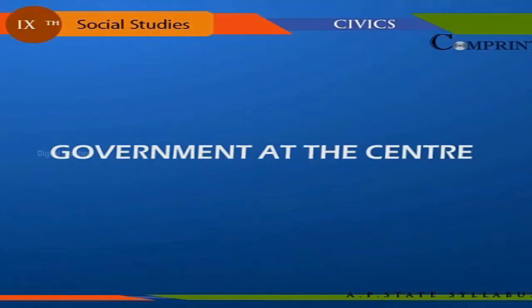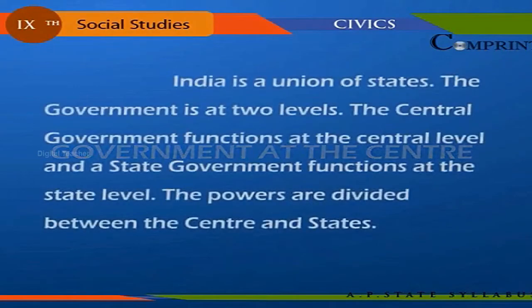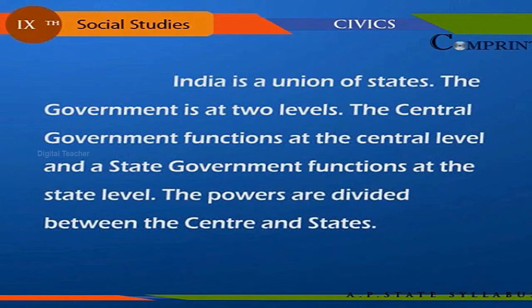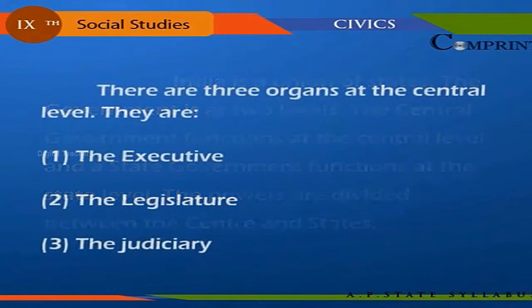India is a union of states. The government functions at two levels: the central government at the central level and a state government at the state level. The powers are divided between the central and states. There are three organs at the central level: one, the executive; two, the legislature; and three, the judiciary.